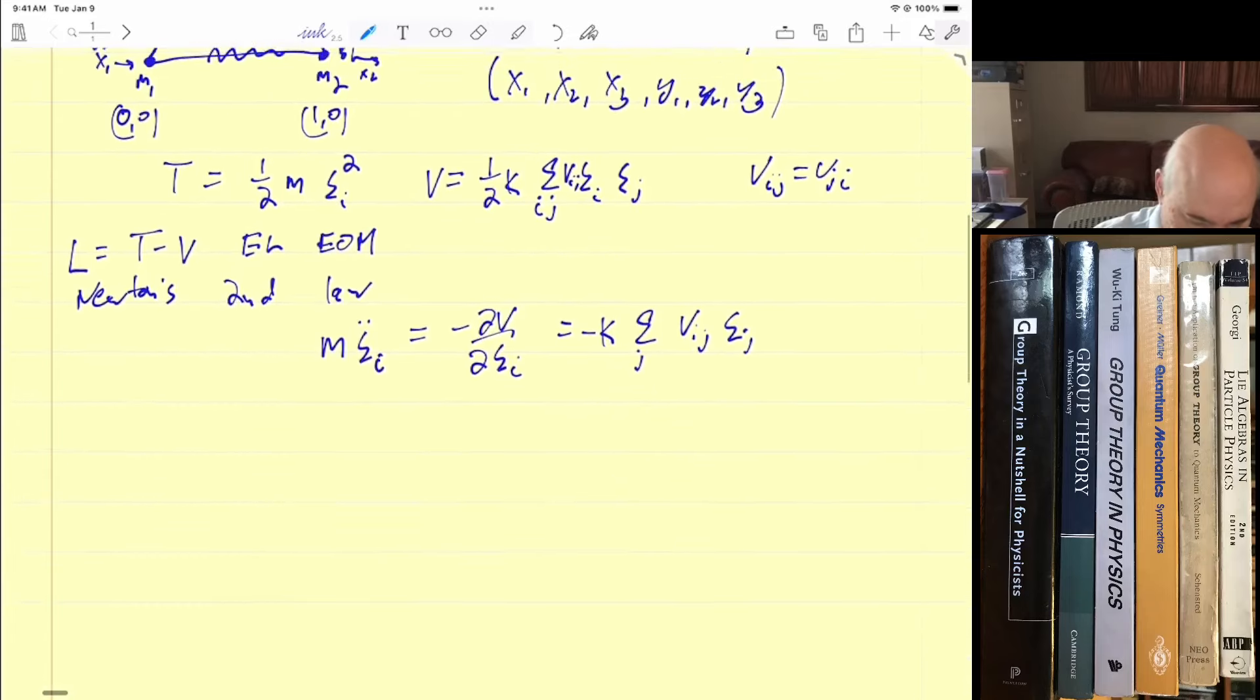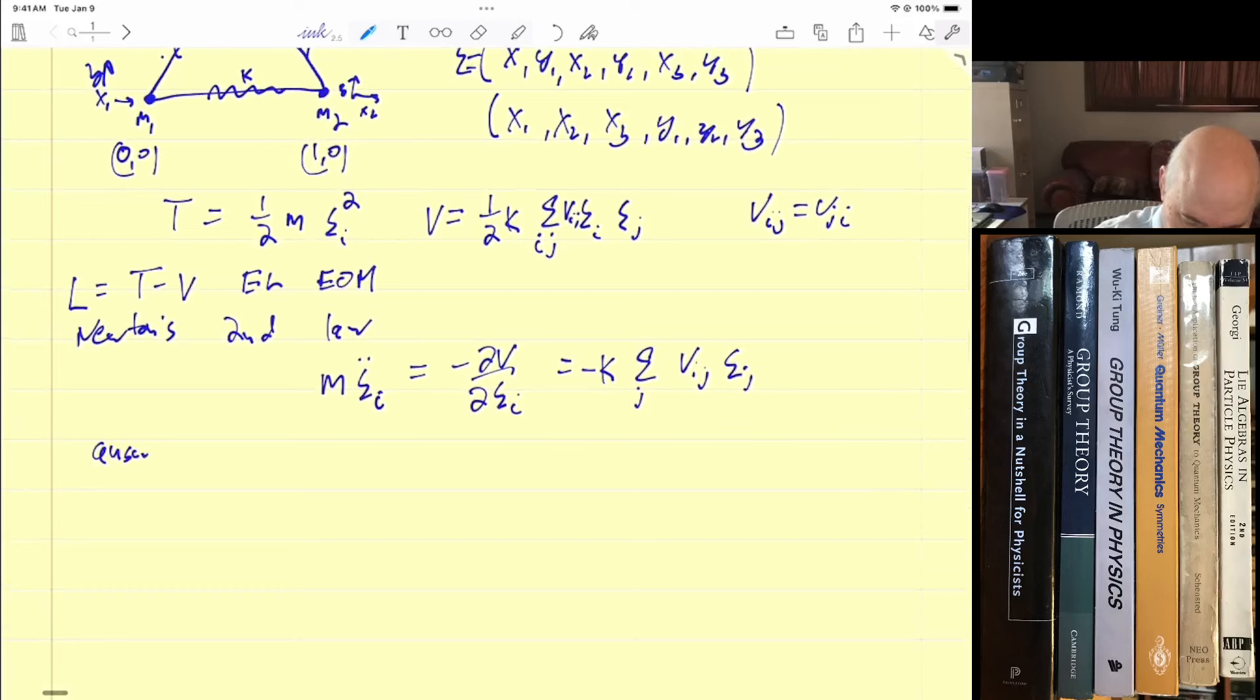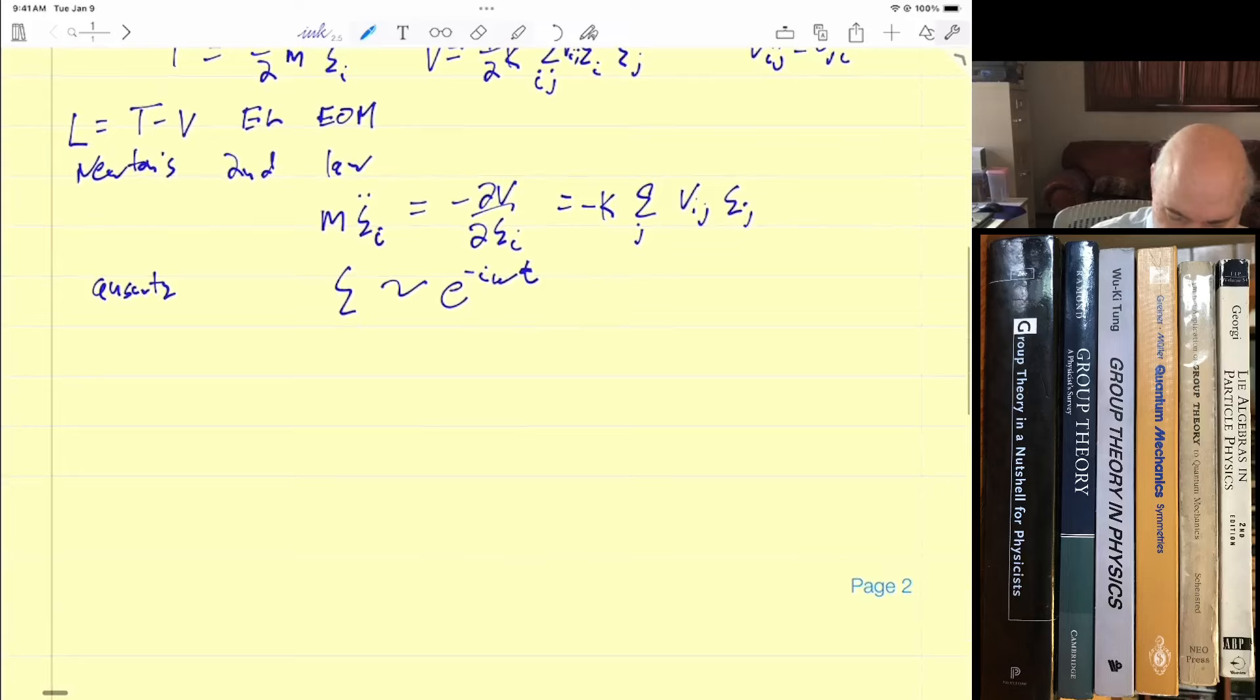So our usual ansatz is just assume that chi goes as E to the minus i omega t. So it's vibrating. And we want to get the frequencies, and we want to get the normal modes. So this is like a vibration in a normal mode. And if you substitute this in here, you're going to get the sum over j, v_ij, chi_j equals lambda chi_i. That's the eigenvalue equation.